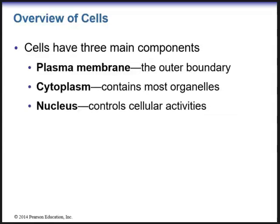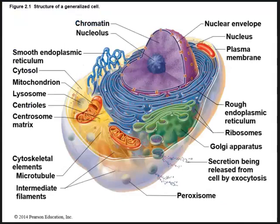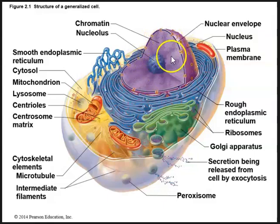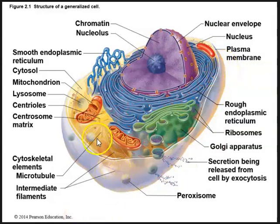Cells have three main components: the outer boundary known as the plasma membrane; the cytoplasm within the cell, which contains most organelles; and the control center of the cell — the nucleus — which controls all cellular activities. Within the center of the cell is the nucleus contained within a nuclear envelope, and we can see a smaller structure called the nucleolus as well as chromatin within the nucleus. The outer plasma membrane holds the shape of the cell and contains everything inside.